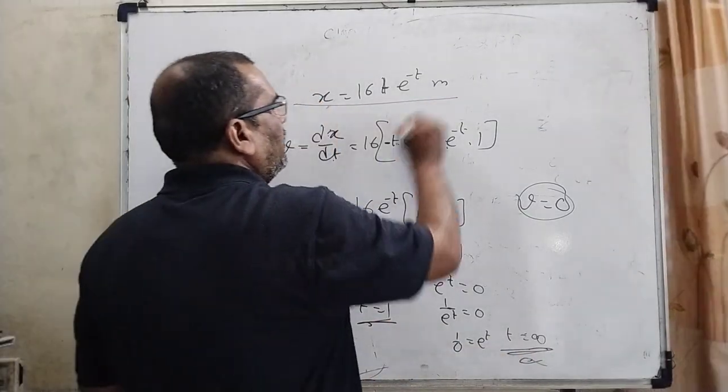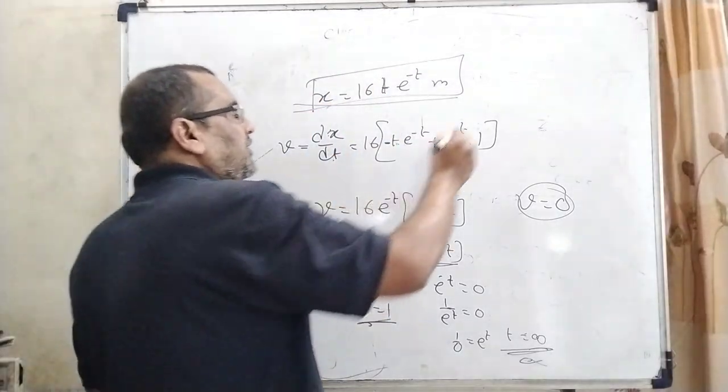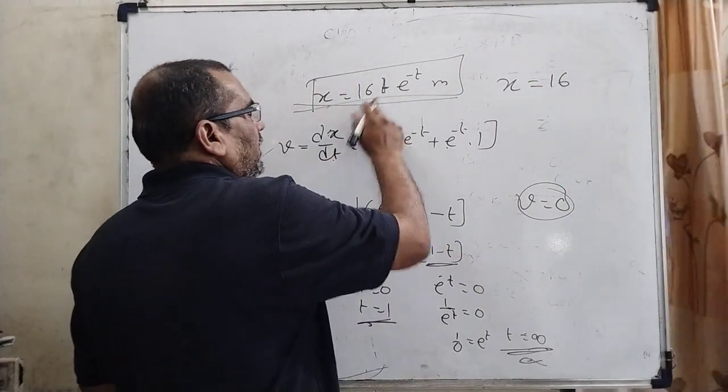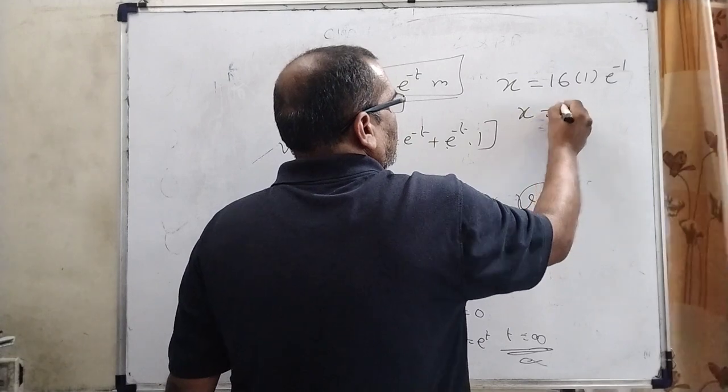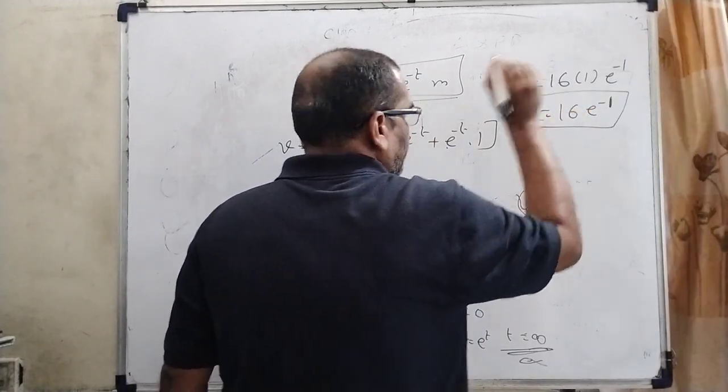Now substitute the value of t = 1 in our given condition or position. Now we get result: x = 16 × 1 × e^(-1), final answer 16e^(-1). So here is the correct answer.